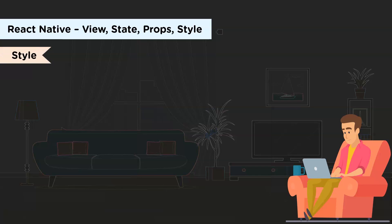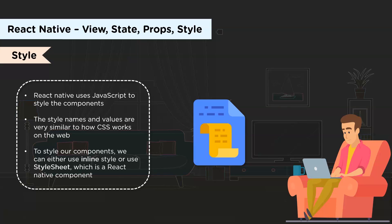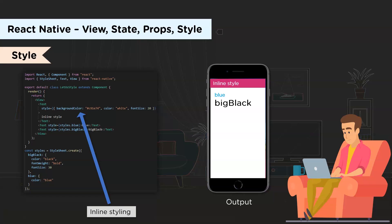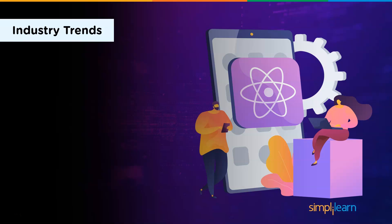Lastly, talking about style — React Native uses conventional JavaScript styling for components. The style names and values are similar to how CSS works. To apply style, we either use inline style or StyleSheet. Here you can see inline styling with a background color, a color, and a font size, and accordingly the output is displayed.